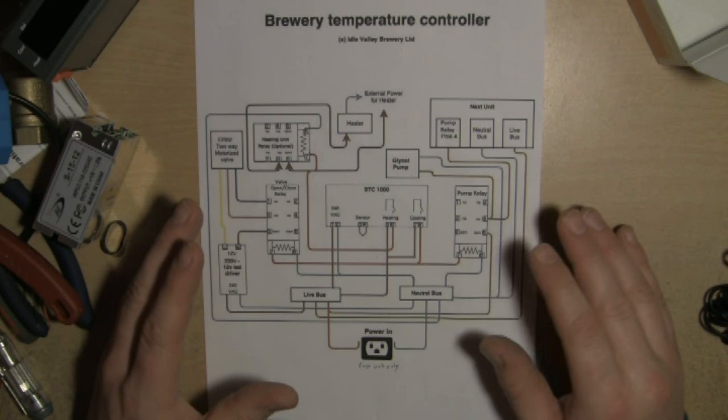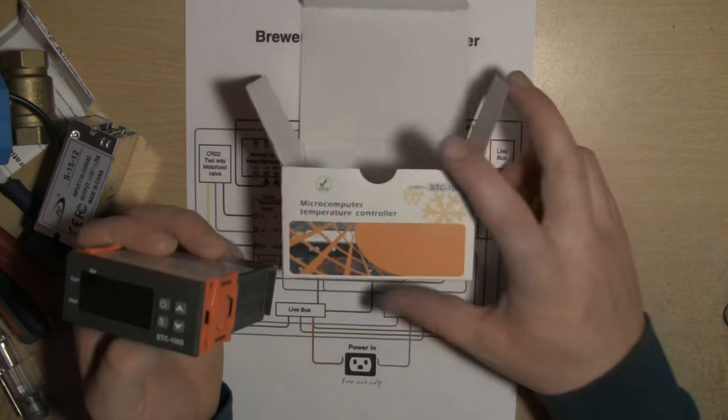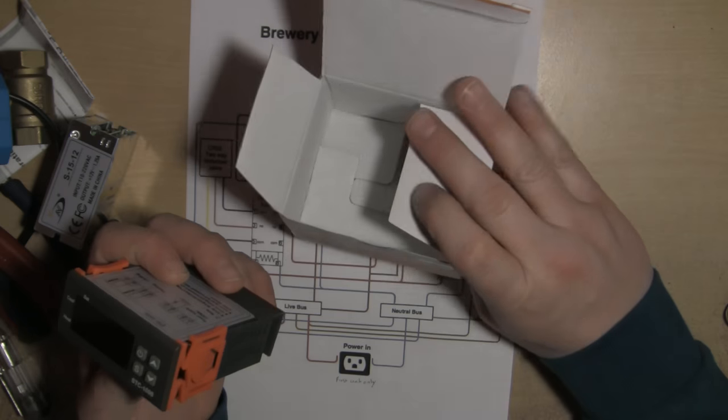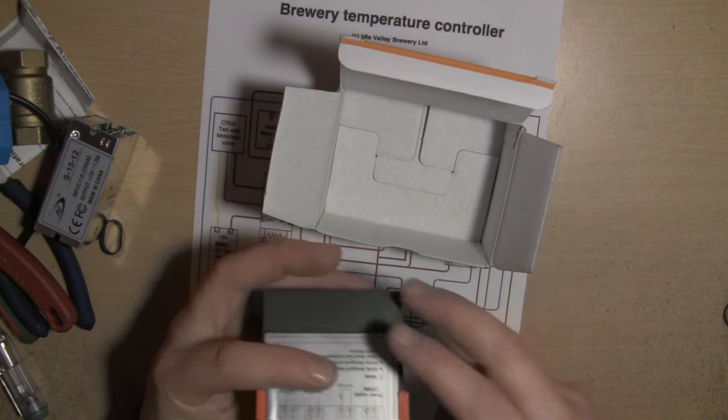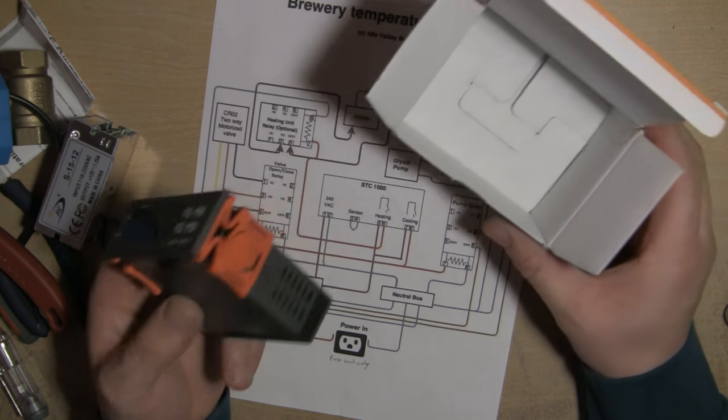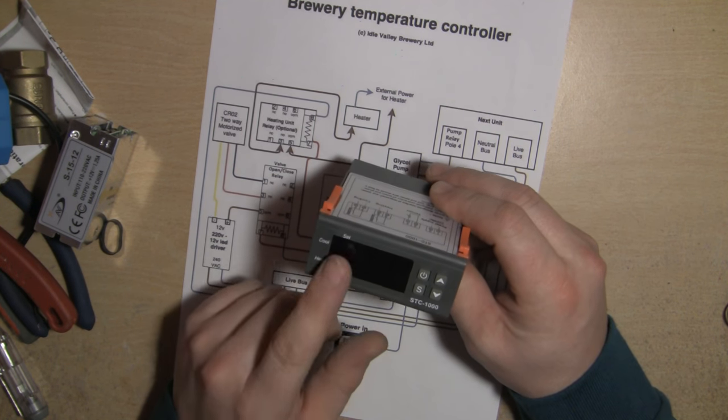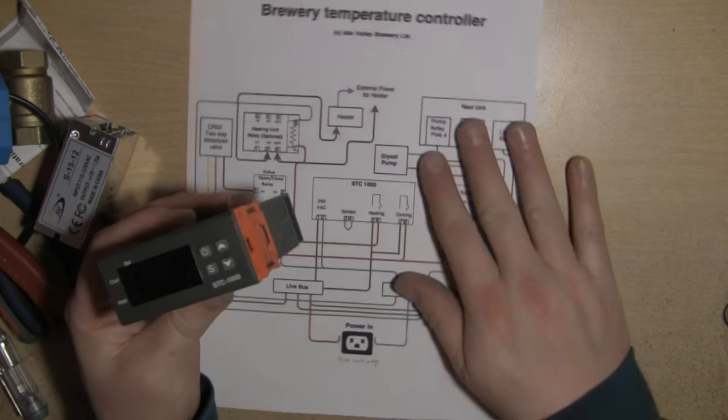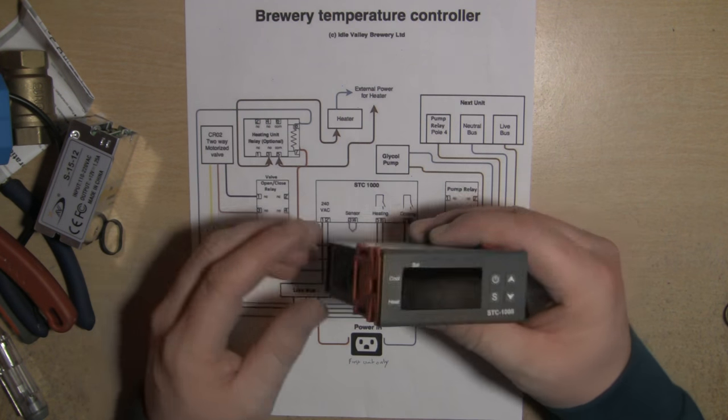First off we're going to need an STC-1000. These are readily available from eBay for around 12 pounds in the UK. You can get them slightly cheaper from China. There are UK stockists, same goes for the States. They do them in 110 versions as well as 220. Don't go for the cheap knockoffs—they don't have the heating relay.